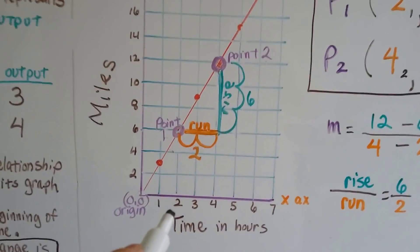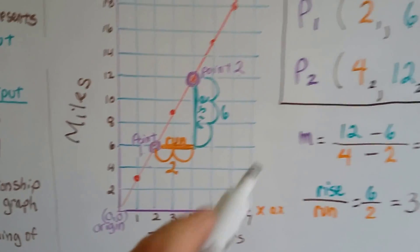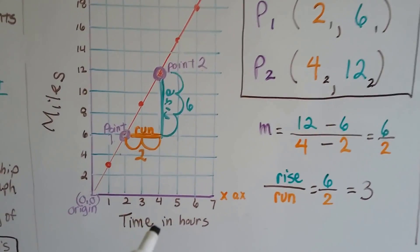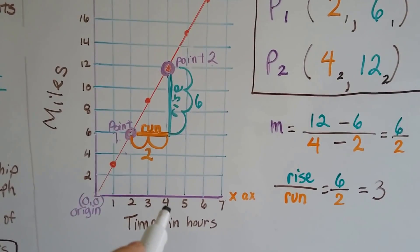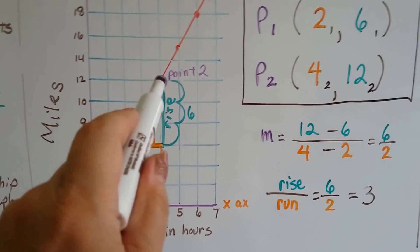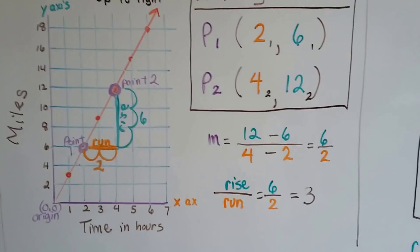We can see for point 1, x is on the 2 and y is on the 6. So we've got 2 comma 6 for our x, y coordinates for point 1. For point 2, we've got an x that's on the 4 and a y that's on the 12. Now all we have to do is subtract point 1 from point 2.